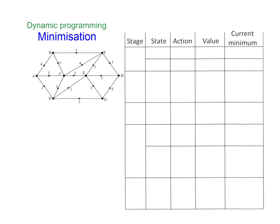The way that dynamic programming works is that we always start from the end. We start from H and we're looking at each vertex in turn, trying to find the best possible scenario to get to H. For example, from vertex F, because it's a minimization problem, it's going to be the shortest distance from F to H, and we can see that that's 3. Because this is a directed network, we can only go in this direction, so I don't need to look at any of the other branches. Similarly, from G to H, the lowest weight is 6.